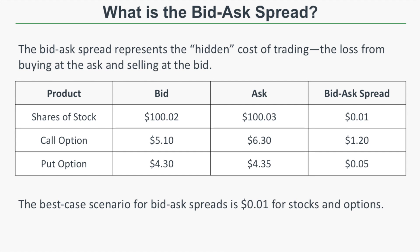The bid-ask spread represents the hidden cost of trading because it indicates the loss from buying at the ask and selling at the bid. For example, with shares of stock where the bid is $100.02 and the ask is $100.03, the spread is one penny. If you bought 100 shares at $100.03 and sold at $100.02, you'd lose one cent per share — a loss of just one dollar on 100 shares.